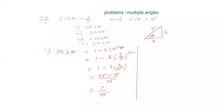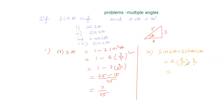Now for the second part, we find sin 2A. The formula for sin 2A is 2 sin A cos A. Substituting: 2 times (3/5) times (4/5). From the triangle, cos A equals adjacent over hypotenuse, which is 4/5. So 2 times 3 times 4 equals 24, and 5 times 5 equals 25. Therefore sin 2A equals 24/25.